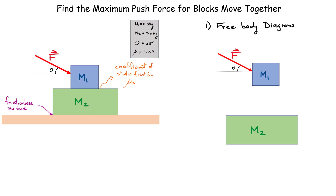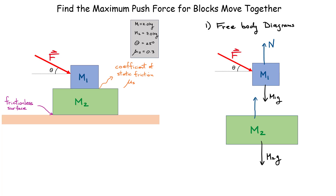Step one says we have to draw the free body diagram. I've separated the blocks and now we simply start writing down our forces. There is a weight on each block — that is the earth pulling down. We have my applied force F. If there are surfaces in contact, there should be a normal force. We call this force N1 — this is block M2 pushing up on M1. For M2, we also have a normal force N2, the earth pushing up on M2. Now if M2 pushes up on M1 with N1, then by Newton's third law M1 must push down on M2 with an equal and opposite N1.